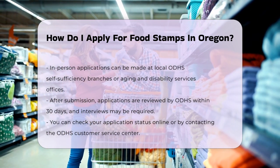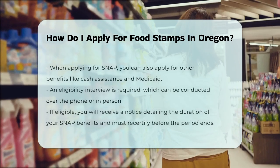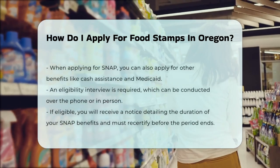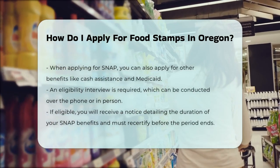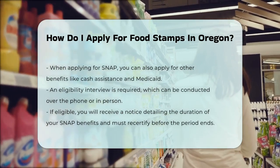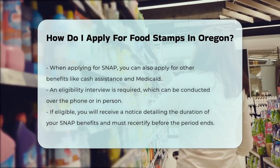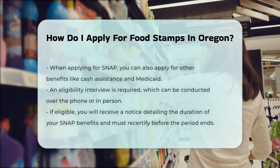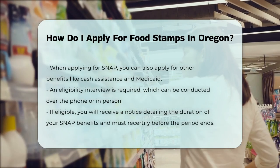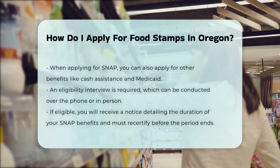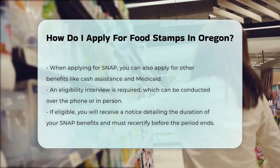Additional programs: when you apply for SNAP, you can also apply for other benefits like cash assistance and the Oregon Health Plan (Medicaid). Some adults may need to sign up for the Oregon Employment and Transition Program, and you will be notified by the local office.